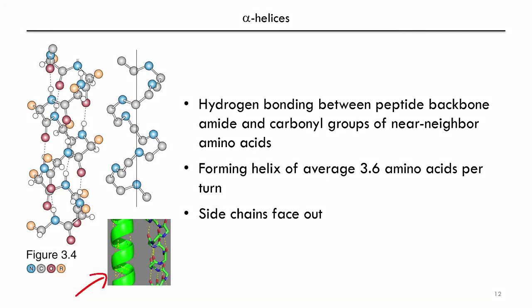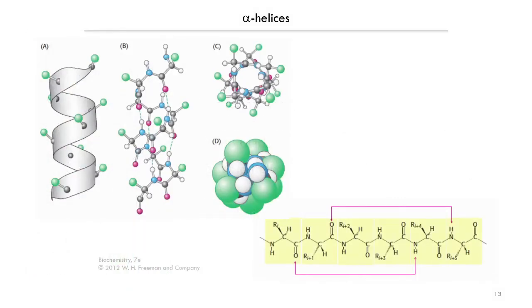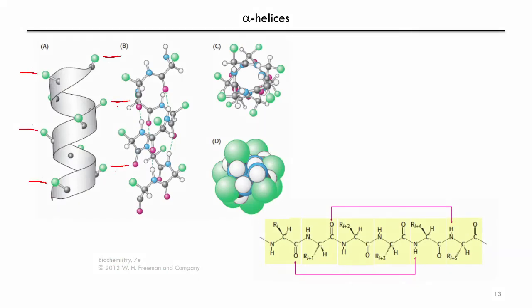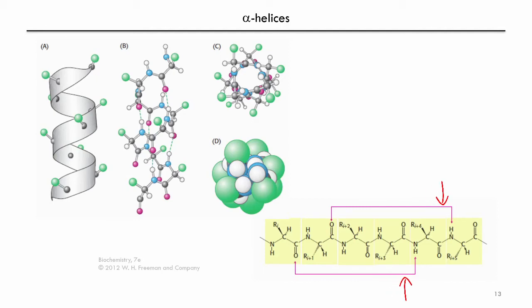Alpha helices are often represented in renderings and drawings as a ribbon shape. You may also notice that the side chains face out, away from the helical axis. Also shown here is a diagram that illustrates which amides and which carbonyl groups hydrogen bond with each other. We see that this distance of between 3 and 4 residues accounts for the number of amino acids per turn.